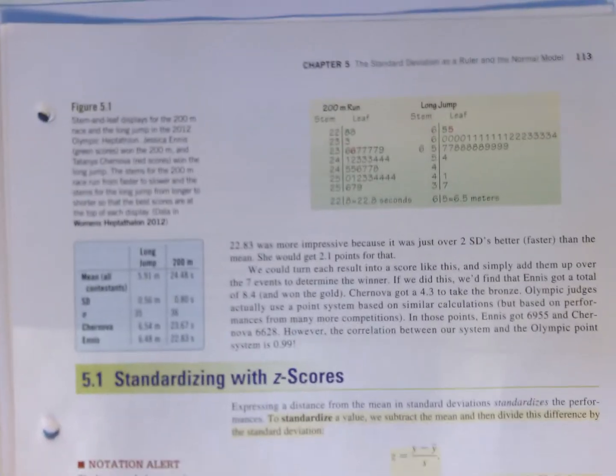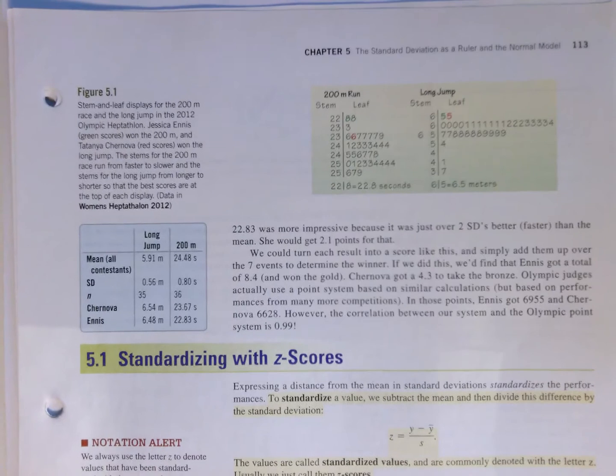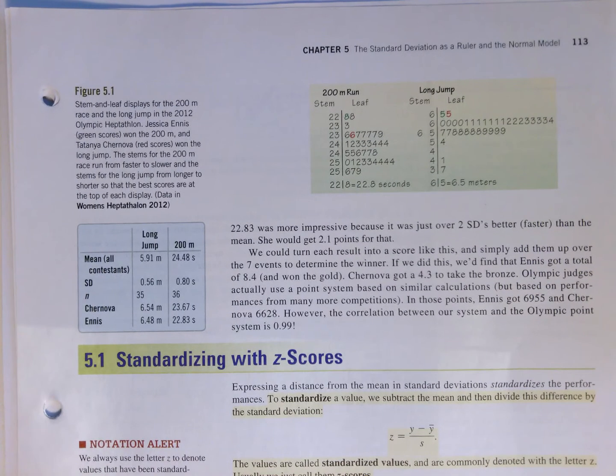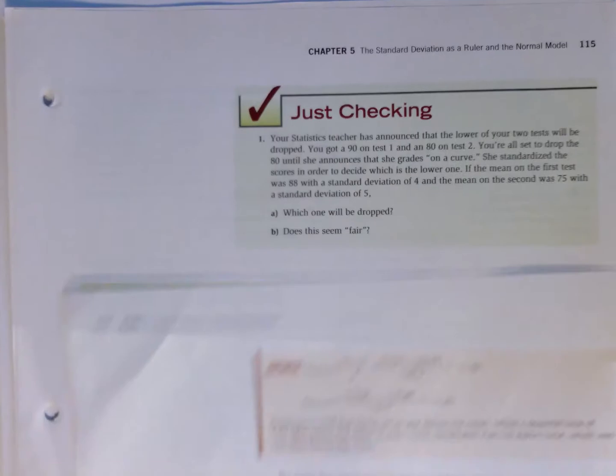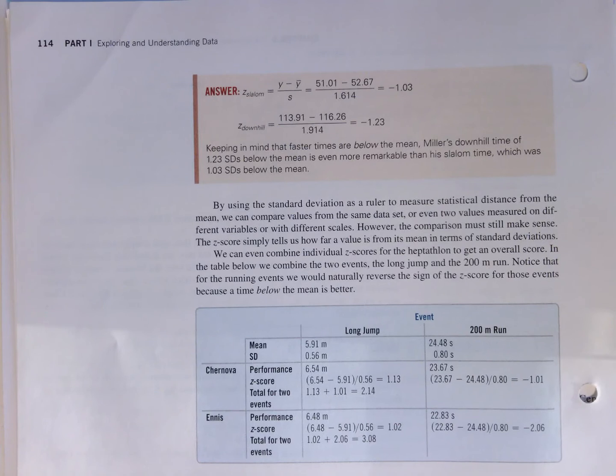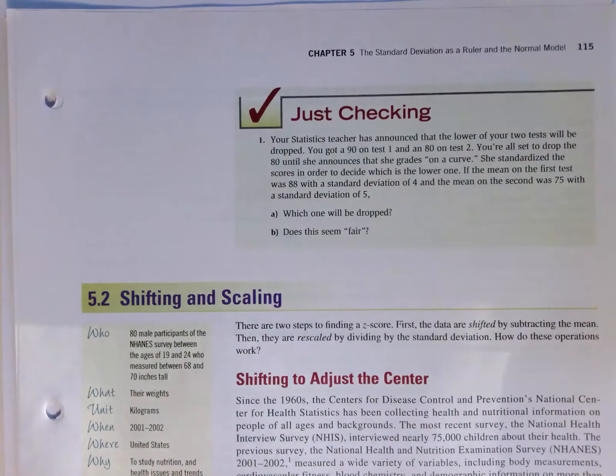The idea of standardizing with z-scores or standard scores uses this formula where we subtract off the mean and divide by the standard deviation. Some examples of this that you are encouraged to be working through. Here's a table where those are put together and you can go ahead and be combining these.